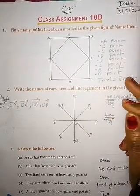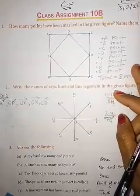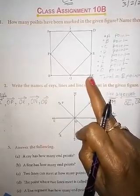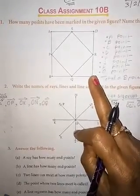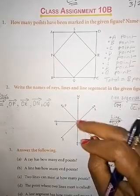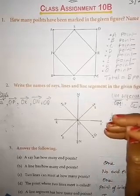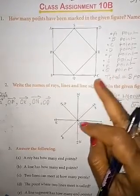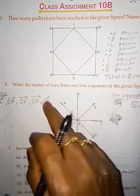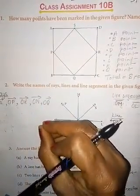How many points have been marked in the given figure? Name them. Children, see this figure carefully. How many points? Yesterday I explained points. Now find out how many points. A point is the smallest dot.